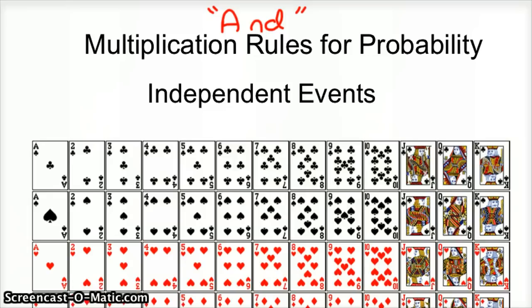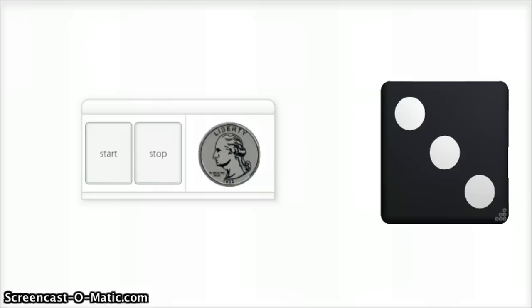So we've got two events occurring, and independent events is kind of the easiest one. That's when the two events do not affect each other. They won't affect each other's probability.